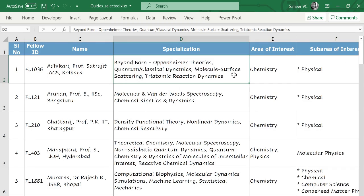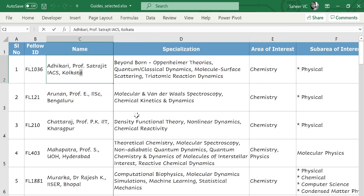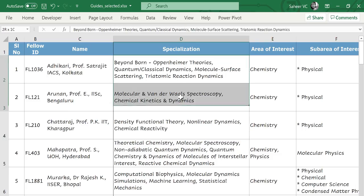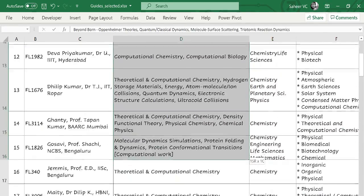You can choose your guides list and make a table of this kind. This is the table that I have prepared. Here are the guides whose specialization matches with my area of interest. So, it's easy for you to move ahead with your application form.